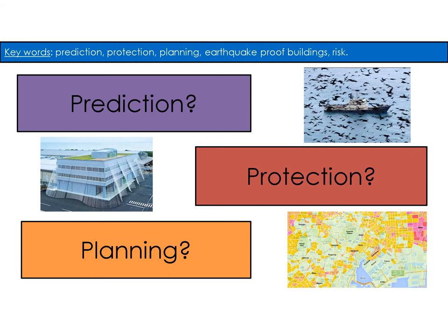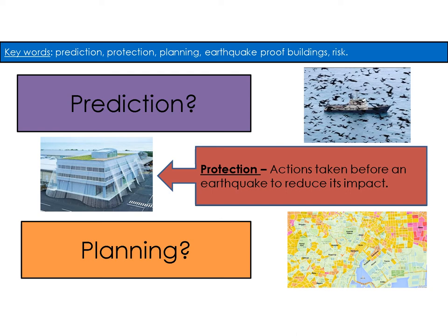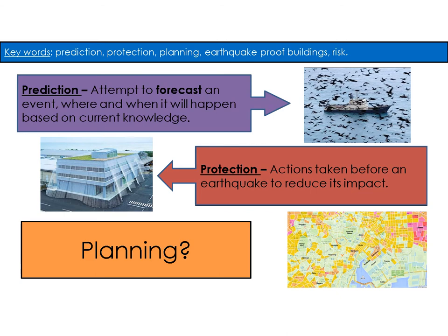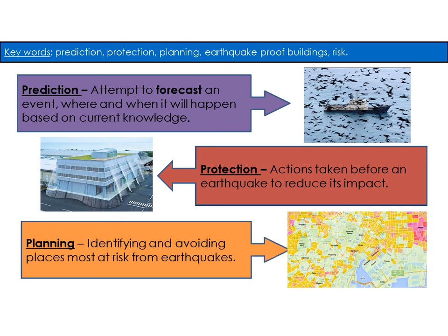So we have got those three Ps: prediction, protection and planning. If we take protection first, this is actions taken before an earthquake to reduce its impact. Prediction is the attempt to forecast an event — where and when it will happen — based on our current knowledge. And planning is identifying and avoiding places most at risk from earthquakes. In Japan, they basically put areas into zones to show which are at greatest risk, so they know where to head first should there be an earthquake.